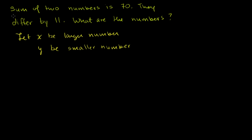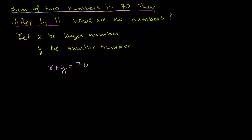The first statement — the sum of the two numbers is 70 — tells us that x plus y must equal 70. The second statement — they differ by 11 — means the larger number minus the smaller number must be 11, so x minus y must equal 11. We now have a system of two equations and two unknowns, which we can solve using the substitution method.